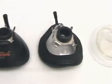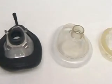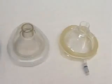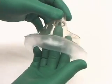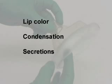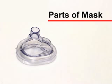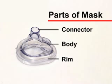There are many types of face masks, varying in design, size, and construction materials. Transparent masks are preferred because they allow for inspection of lip color, condensation, secretions, and vomitus. Face masks consist of three parts: the rim, the body, and the connector.